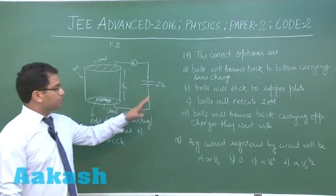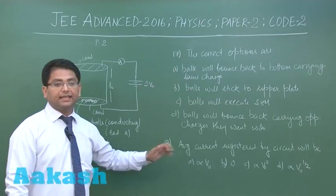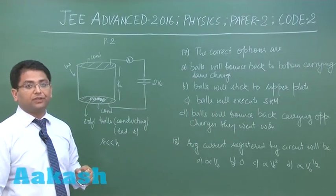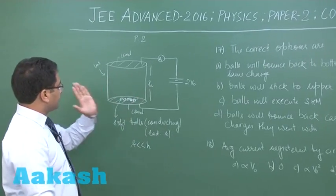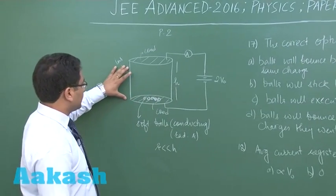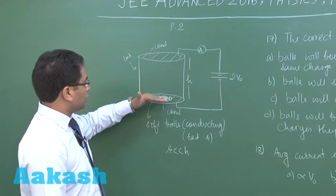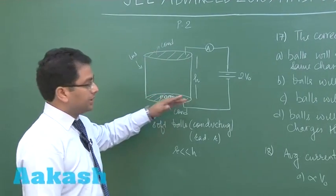The second paragraph comprising question number 17 and 18 is very beautifully framed. Let me explain. There is a cylinder and this curved surface is insulating, the upper plate and lower plates are conducting, and here's the potential difference, the amp meter.